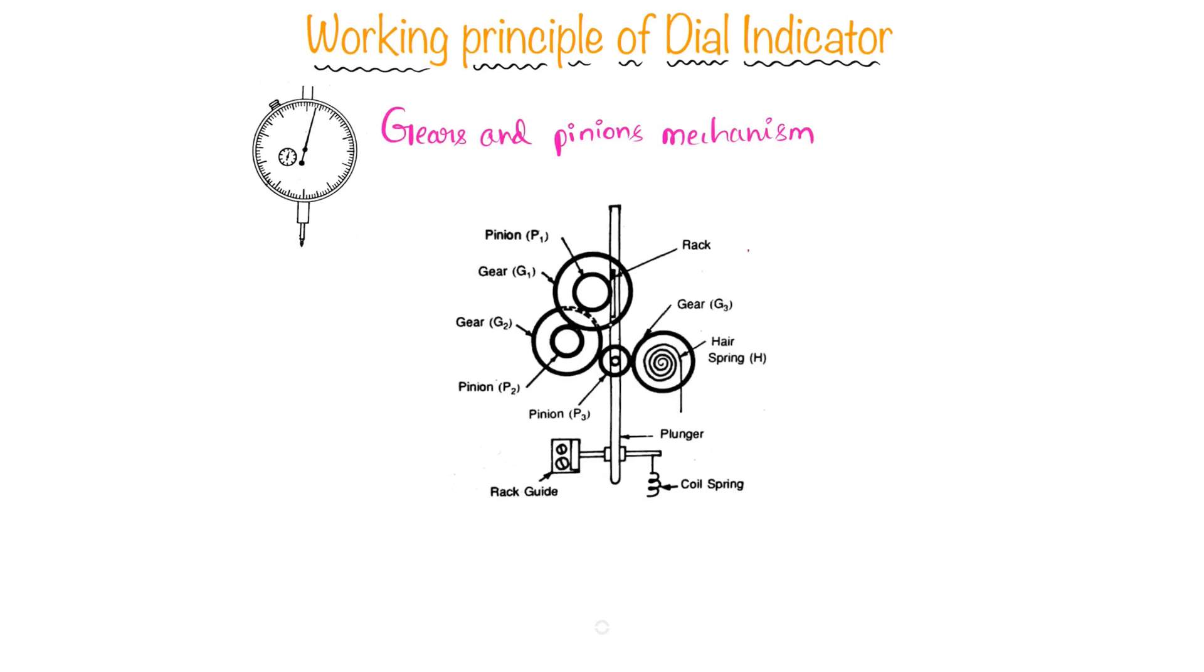This is the schematic representation of gears and pinion mechanism in the dial indicators. The main principle behind this type of dial indicator is that the linear movement of this plunger will be multiplied through the series of gears and pinions.